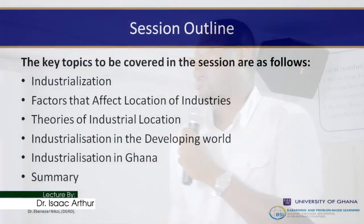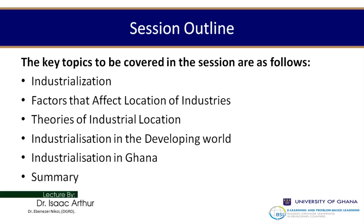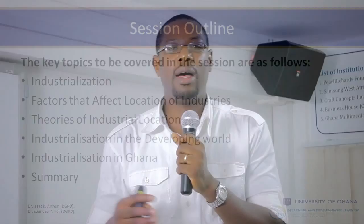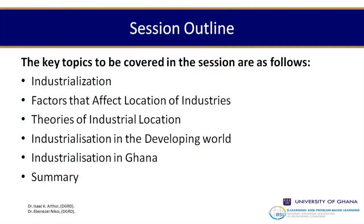For the outline, the topics we'll look at include what industrialization means, and then the factors that affect location of industries. Every industry is located in a place for several reasons, and we'll try to understand factors that would attract or deter a company from locating in a certain area.